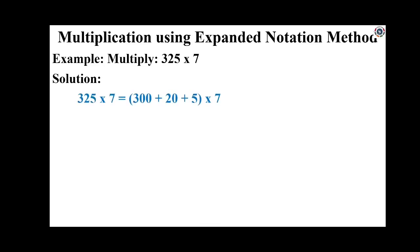Let us see this with an example. Multiply 325 into 7. Here 7 is a 1-digit number, so there is no need to expand 7. 325 is a 3-digit number. Now expand the number 325 with their place value. In 325, 5 is in the ones place, so 5 ones.